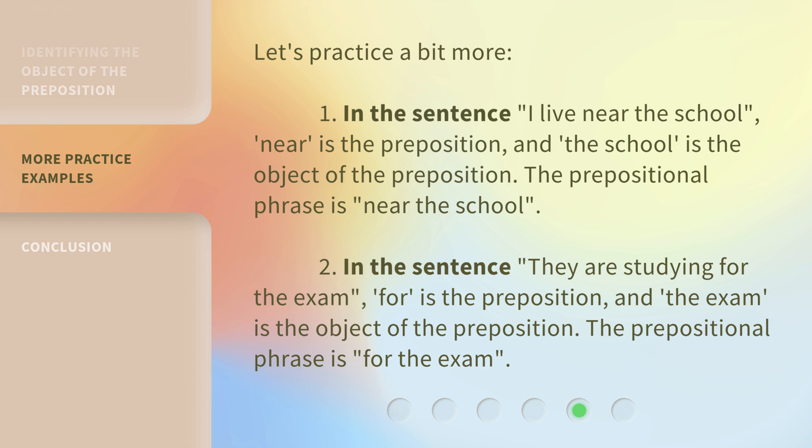Two: in the sentence "they are studying for the exam," "for" is the preposition and "the exam" is the object of the preposition. The prepositional phrase is "for the exam."